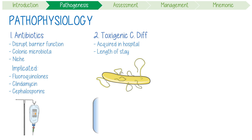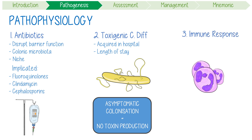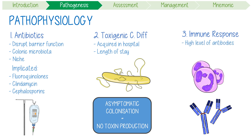It's important to note that asymptomatic colonization is very common, and this might be because the strain they have does not produce a toxin. Finally, the host's immune response to the toxin determines if a patient becomes symptomatic or not. If a patient has a high level of antibodies against C. diff toxins, then they're much less likely to develop diarrhea.